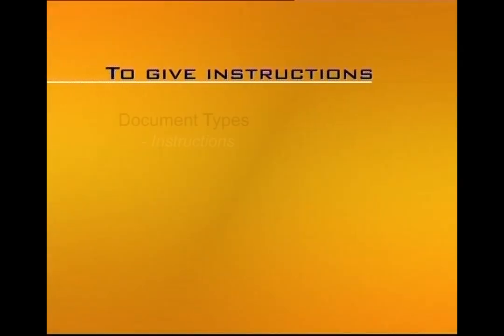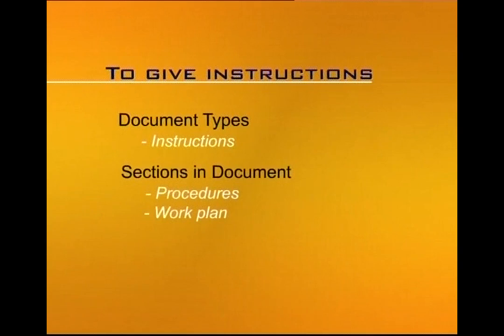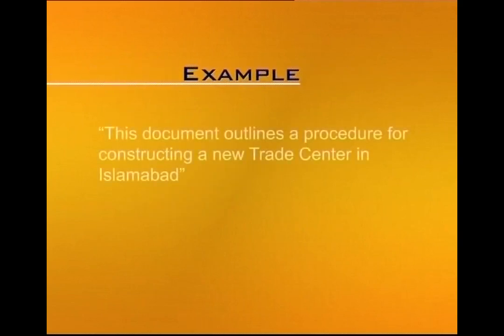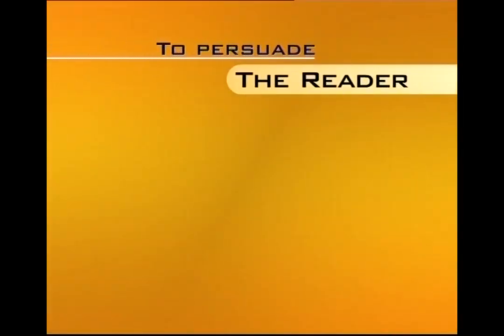Documents that give instructions may have sections covering procedures or a work plan. An example objective statement could be: 'This document outlines a procedure for constructing a new trade center in Islamabad.' In this example it is very clear that specific procedures are going to be discussed — not just general information — so it is obviously instructions that are going to be included in the document. Documents meant to persuade the reader include proposals, recommendation reports, job application letters, or resumes.